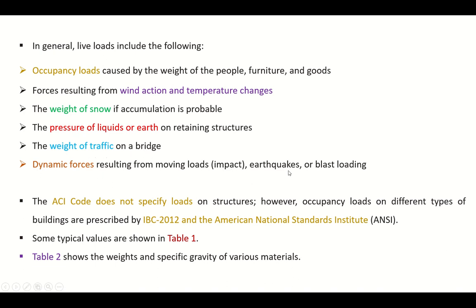Now the ACI code does not specify loads on structures. However, occupancy loads on different types of buildings are prescribed by IBC 2012. As we discussed previously, IBC is International Building Code and the American National Standards Institute. So ACI took the loading from these two standards. Some typical values for the loads are shown in Table 1, and Table 2 shows the weight and specific gravity of various materials.